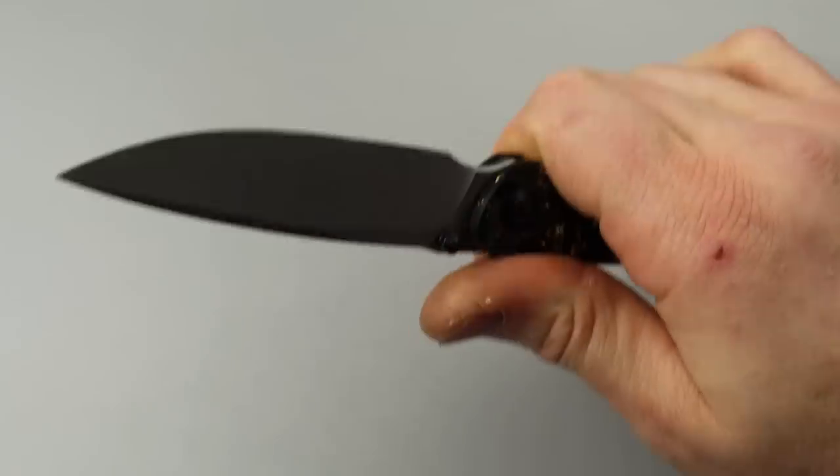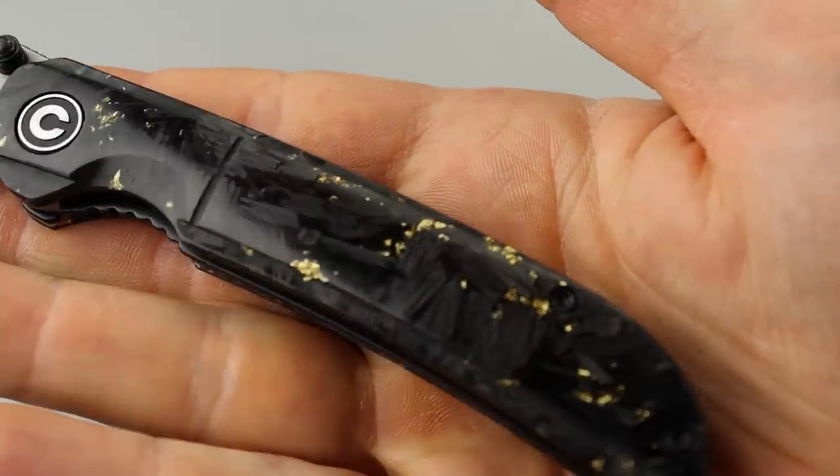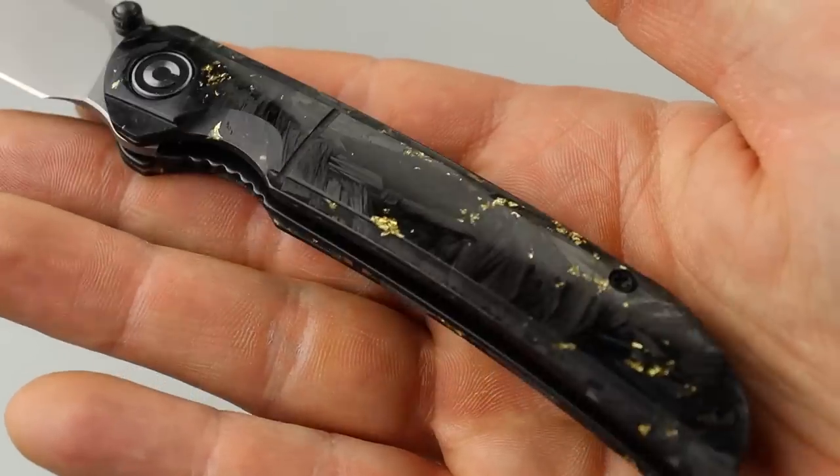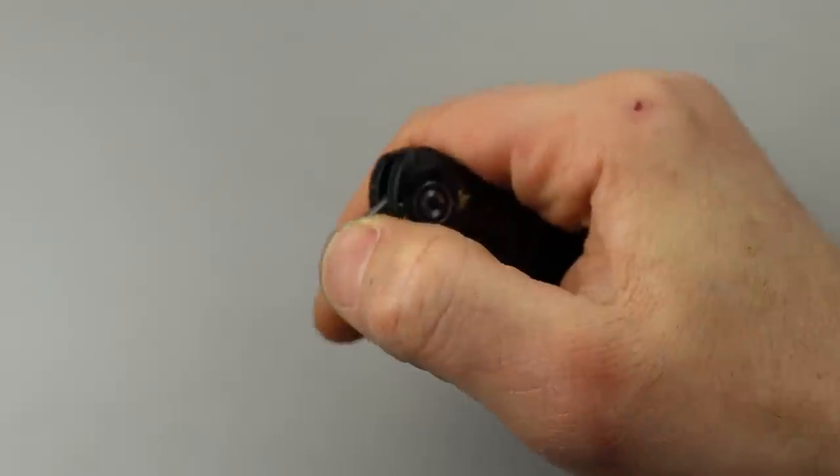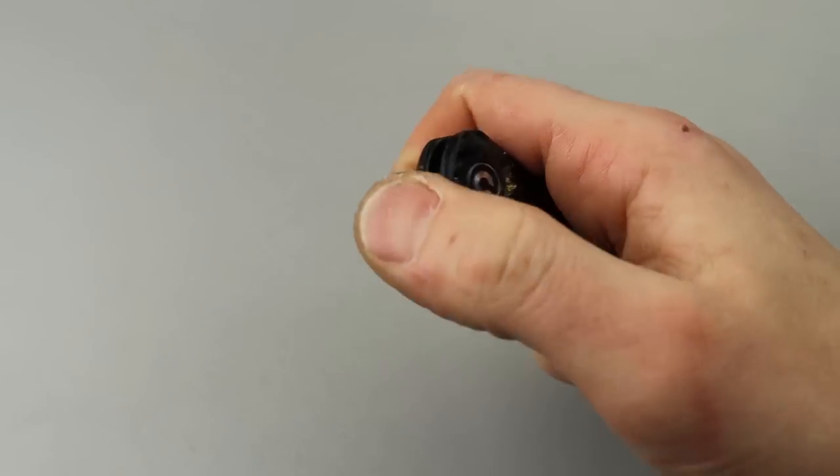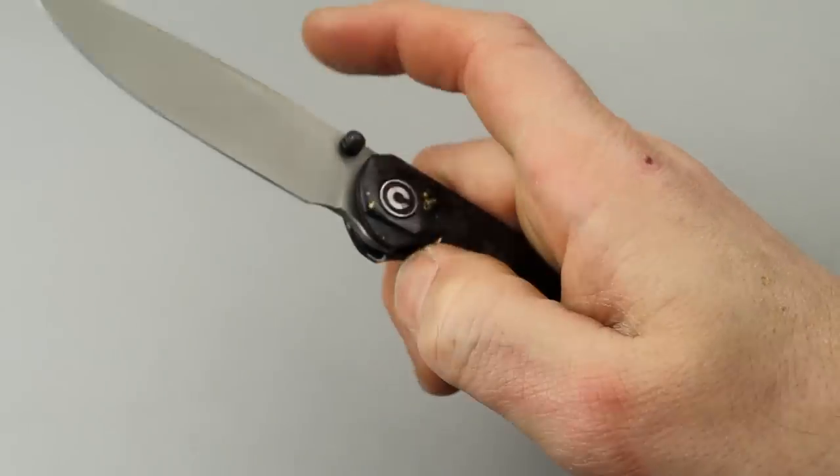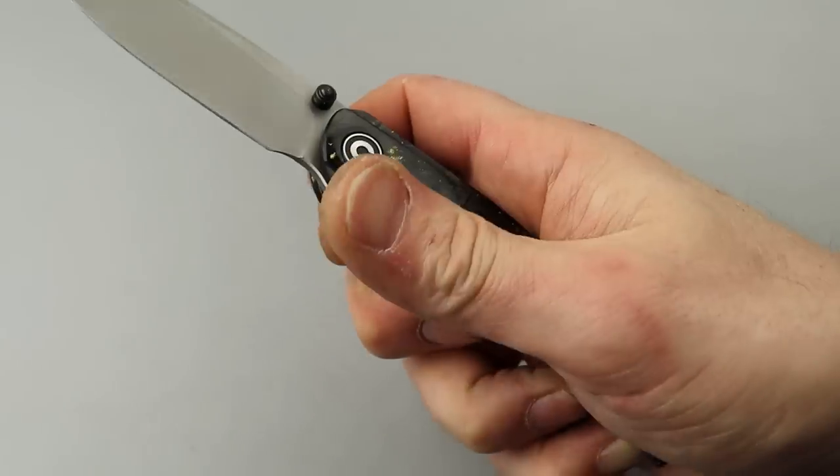Beautiful, sleek, slim knife. And, one thing that's really cool about this, besides the carbon, the shred carbon fiber with the gold flakes, is that this is a front flipper. And, if you're not great at front flipping, which this one's really easy, but if you're not great at front flipping, then this is a great knife to get because you don't have to use the front flipper.